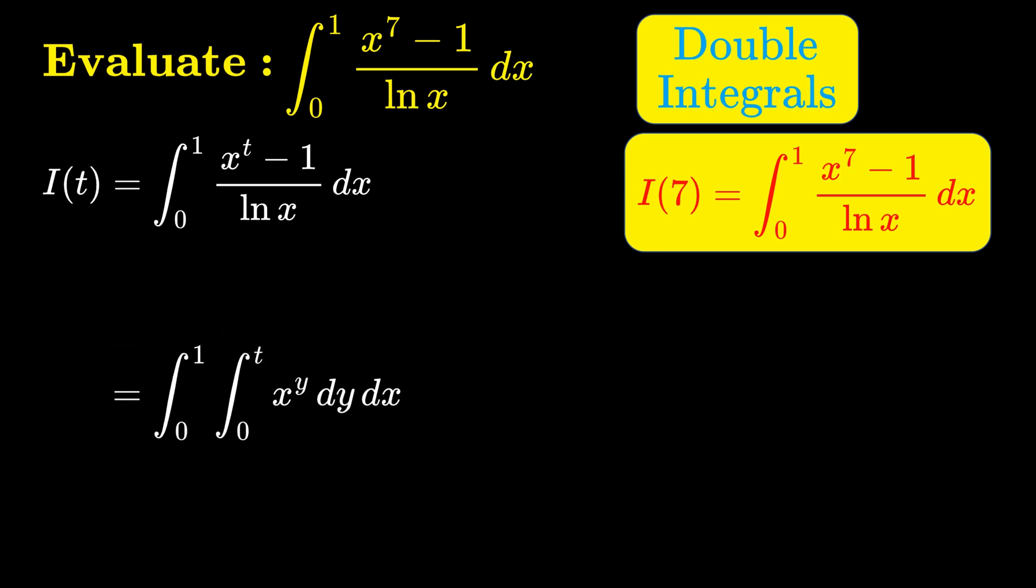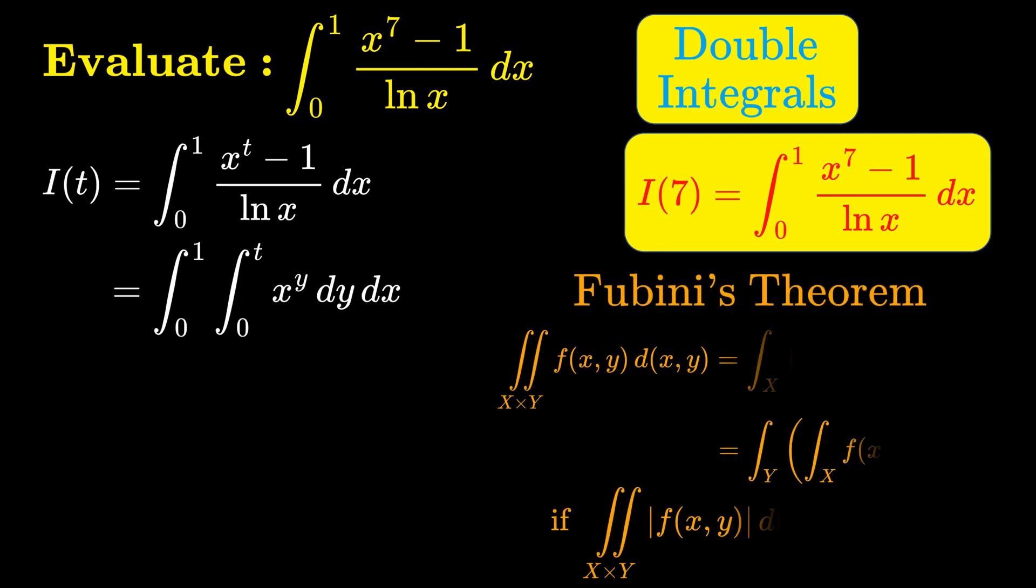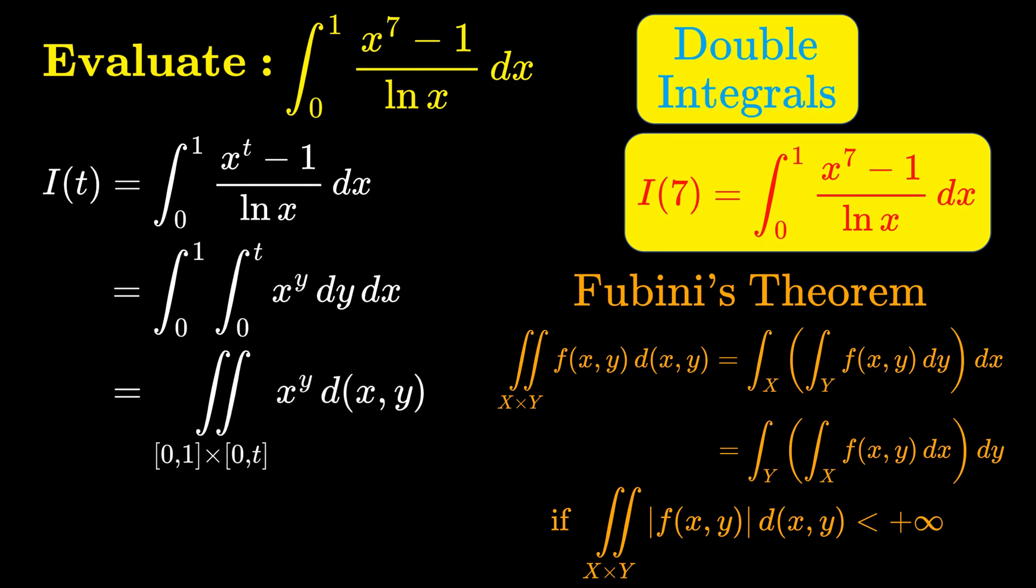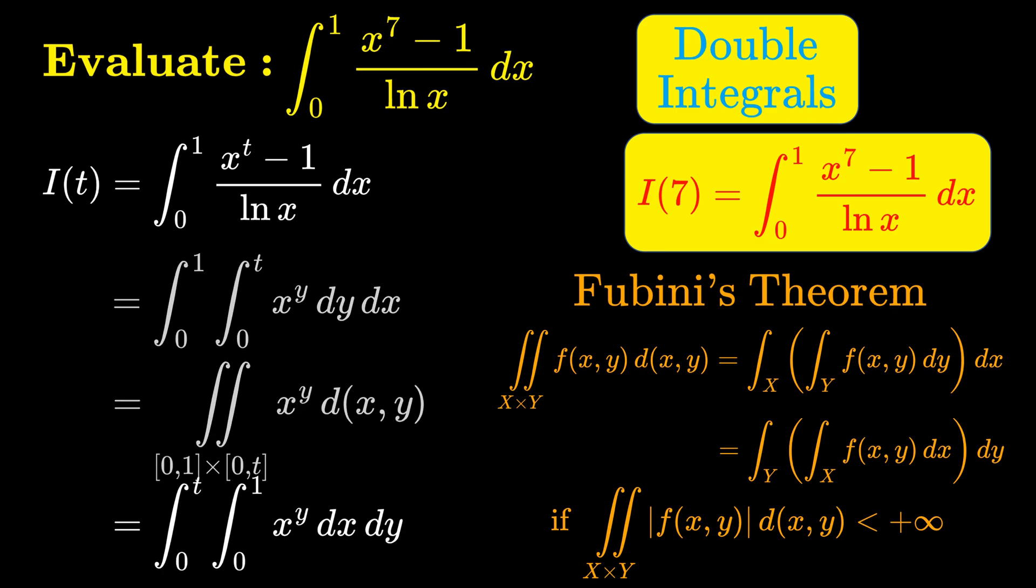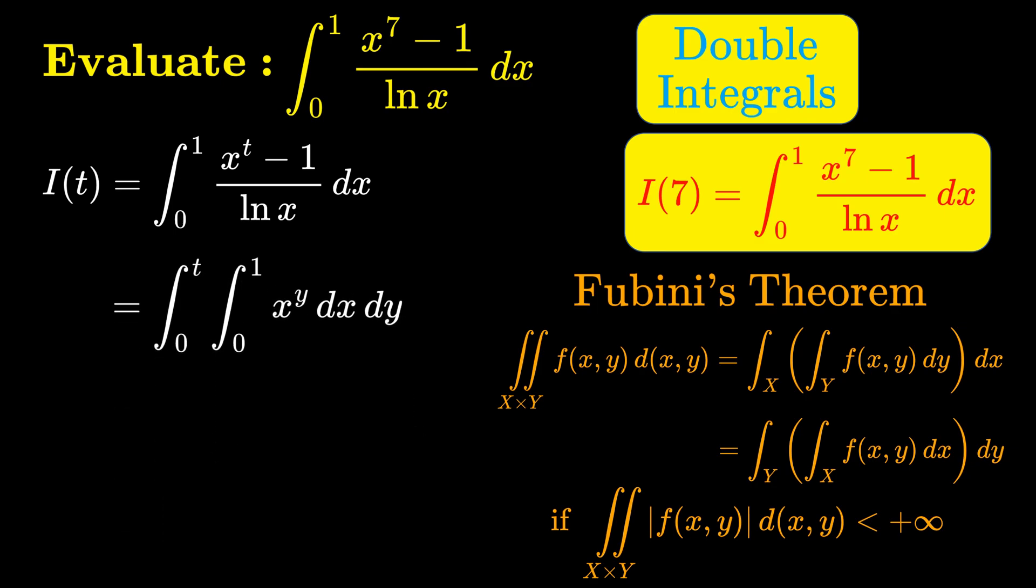We now have rewritten the integral as a double integral. The trick now is to apply Fubini's theorem to switch the order of integration. Since the region 0 to 1 by 0 to t that we are integrating over is just a rectangle, we don't really have to change any of the bounds of integration. We just have to switch the order of integration here.